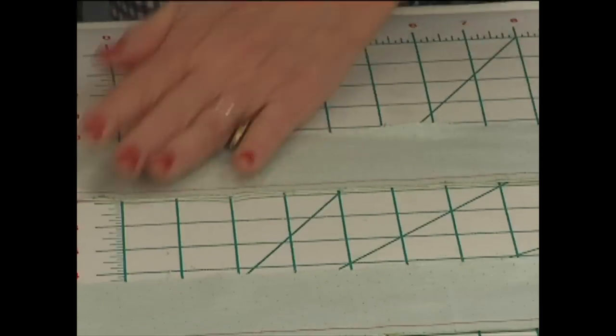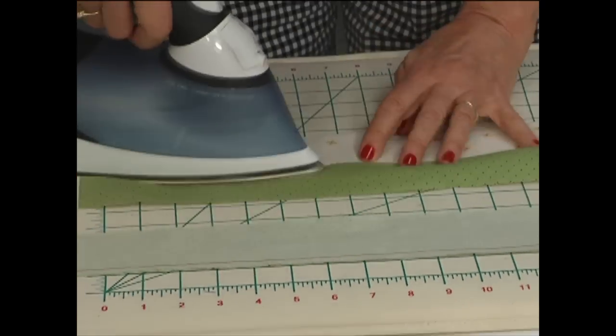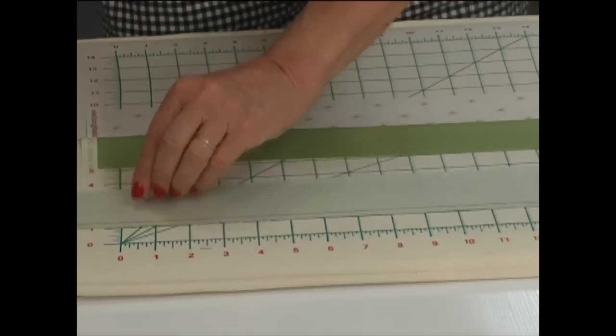Place them on the pressing mat with dark across the top, set the seam open, and press towards the dark.